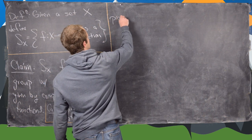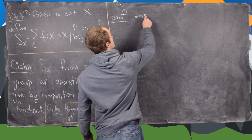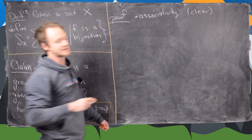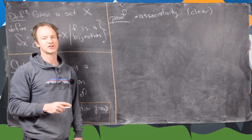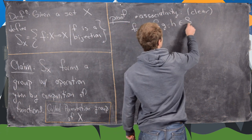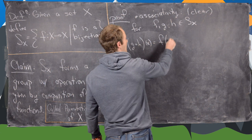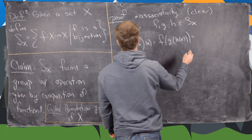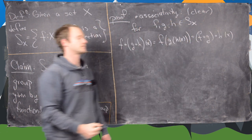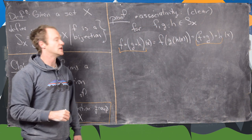So let's prove this claim. The first thing we need to show is associativity. Associativity is clear because the associativity of composition of functions is a well-known fact. For f, g, and h in S_x, f composed with g composed with h of x equals f of g of h of x, which is the same as f composed with g, then composed with h of x. Since this statement is true for all x, those two functions are the same.